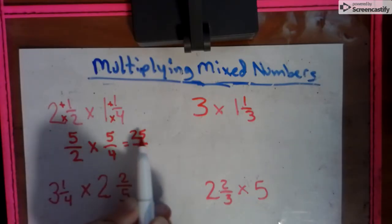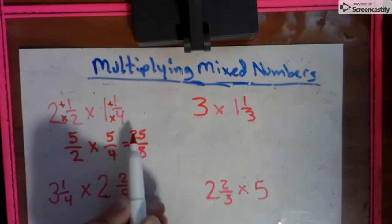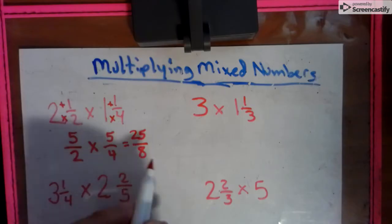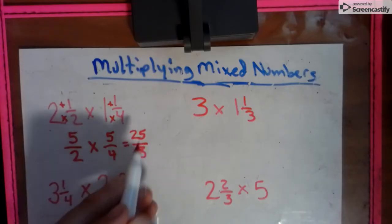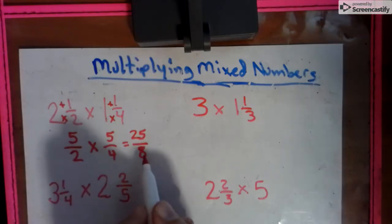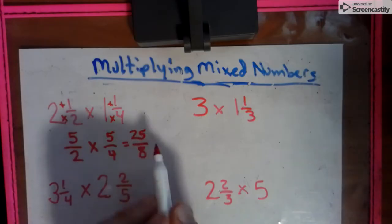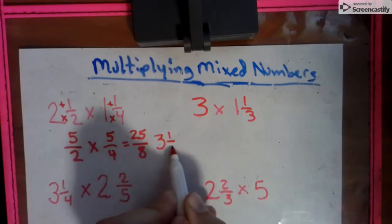But if you notice, we are top-heavy. That means the numerator is larger than the denominator, and that is an improper fraction. So we have to fix this just like we did a few days ago. How many 8s go into 25? That would be 3. Makes 24. How many leftovers? 1 over 8.